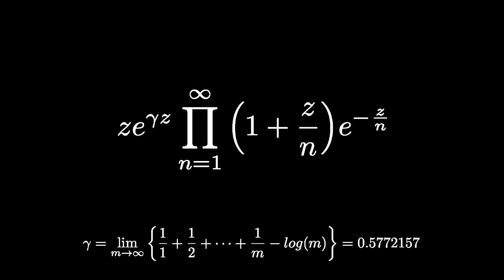The constant gamma is known as the Euler-Mascheroni constant. Let's prove that it exists.